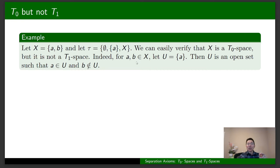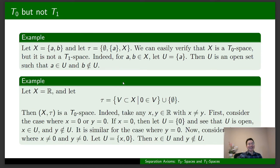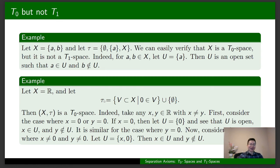Therefore, there is no open set containing b that doesn't contain a, so X is not a T1 space. For another example, let X be ℝ, the real line, and let tau be this collection where an element of tau is either the empty set or any set that contains the origin 0. We can show that tau is a topology on X, and therefore X with tau is a topological space.